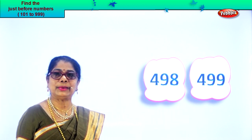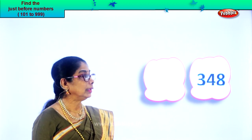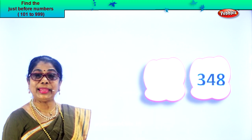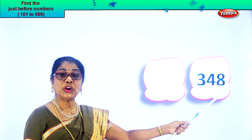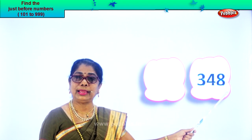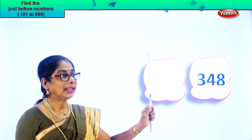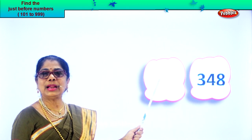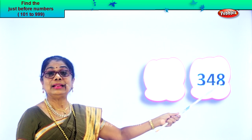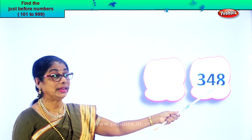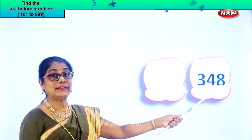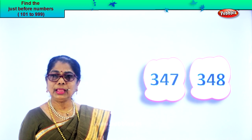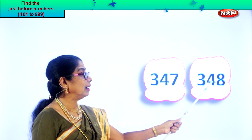Look what you have here. In the ones place you have eight, tens place four, and hundreds place three. So we read the numeral 348 — three hundred and forty-eight. We are looking for the number before. One less than eight is seven. So we'll have 347. That's the number before 348. 347, 348.